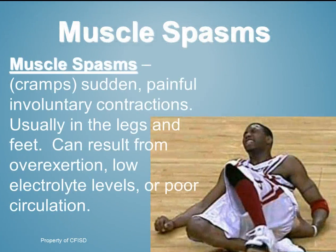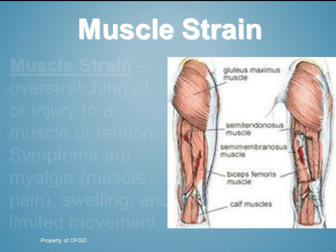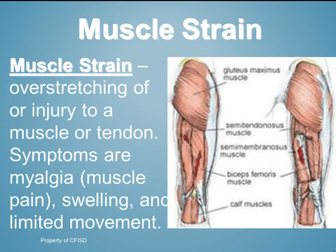Muscle spasms or cramps are sudden, painful, involuntary contractions, usually in the legs and feet, which can result from exertion, low electrolyte levels, or poor circulation. Muscle strain is the overstretching or injury of a muscle or tendon. Symptoms include myalgia or muscle pain, swelling, and limited movement. The hamstrings and quadriceps are particularly at risk because they cross the body at the hip and knee joints and are used in high-speed activities such as track and field, football, basketball, and soccer. This concludes our muscular system.